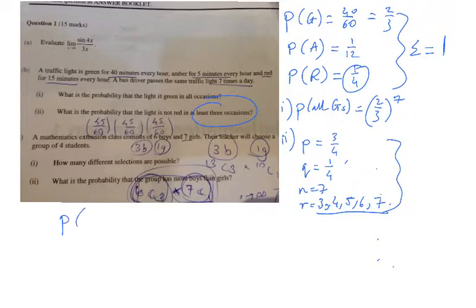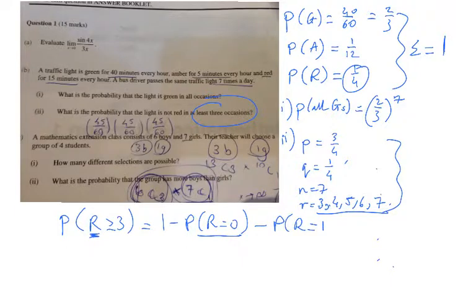That is the probability that R is greater than or equal to 3. R here does not represent red. It just represents the number of occurrences of what you are interested in. In this case, that the traffic light does not show red. It can also be written as 1 minus the probability of R equals 0. R equals 0 here means that you don't have any non-red traffic lights, minus the probability of R equals 1, minus the probability of R equals 2.